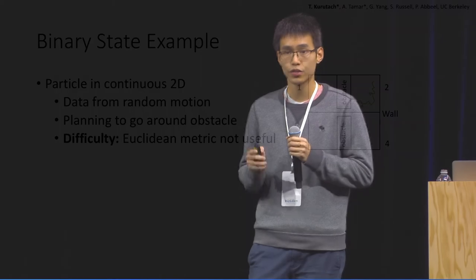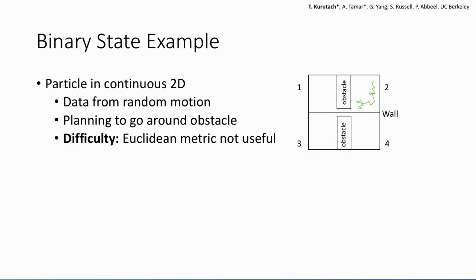Now in this binary state space example, let's look at this 2D domain where the top two rooms are separated from the bottom two by a thin wall. The data is again randomly perturbing the agent, it's just a random particle moving. And the goal here is to plan to go around the obstacle.